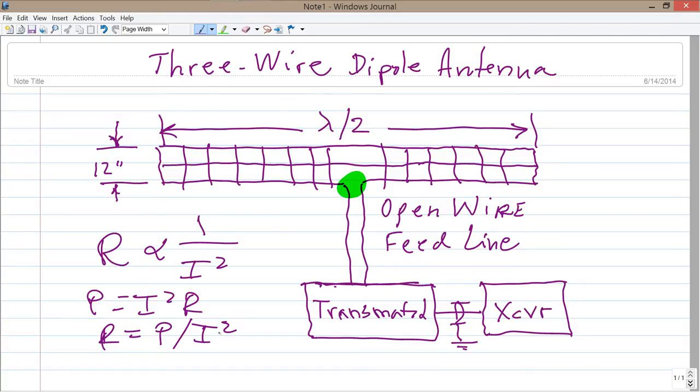You divide the current up three ways here. So what you're getting with a constant power is you are going to end up with one-third of the current in each one of these wires. So you square one-third, you get one-ninth. You divide by one-ninth. It's the equivalent of multiplying by nine.